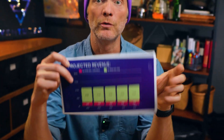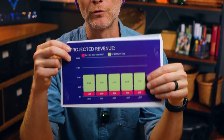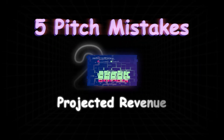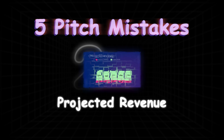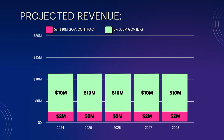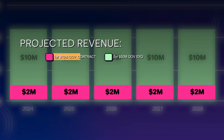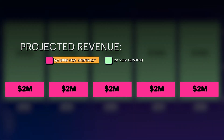Mistake number two is here in the projected revenue slide, and this one's a little technical, so let's work through an example together. In red, we have future revenue that's backed by a signed five-year, $10 million government contract. So the red's great.